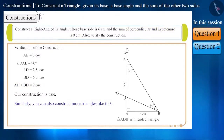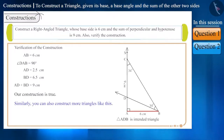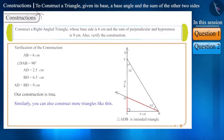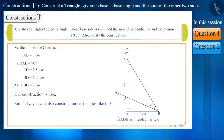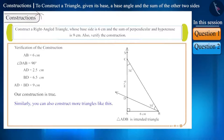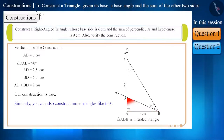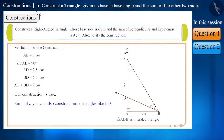Similarly, you can also construct more triangles like this, where you are given the base side, the base angle, and the sum of the other two sides. You can try to do more such constructions by changing the length of the sides and the measure of the angles. But if you have to construct a triangle where you are given the base side and instead of the base angle, the measure of the other angle is given, and the sum of the other two sides is also given, then how will you do such a construction?